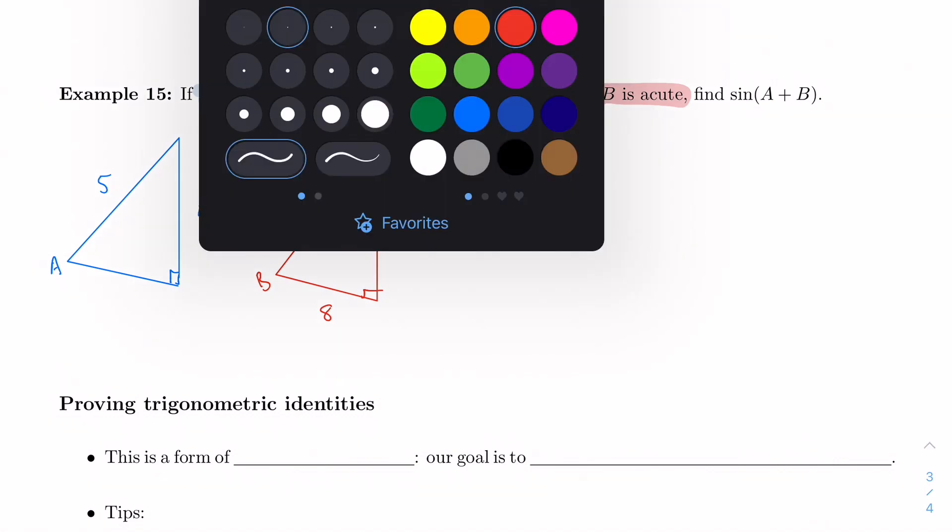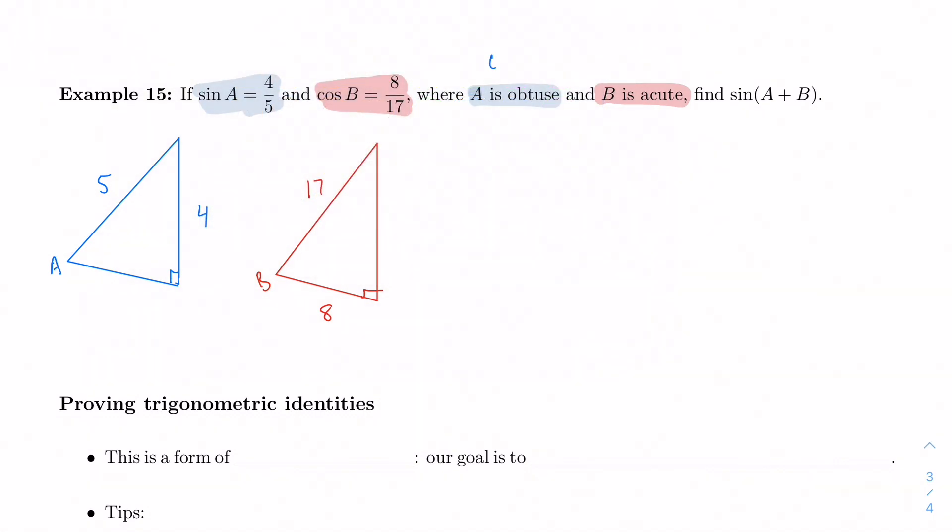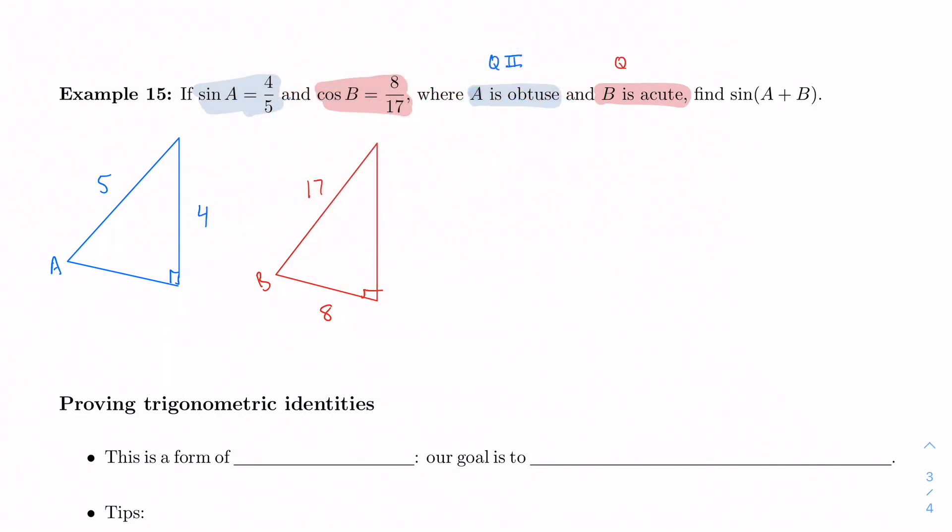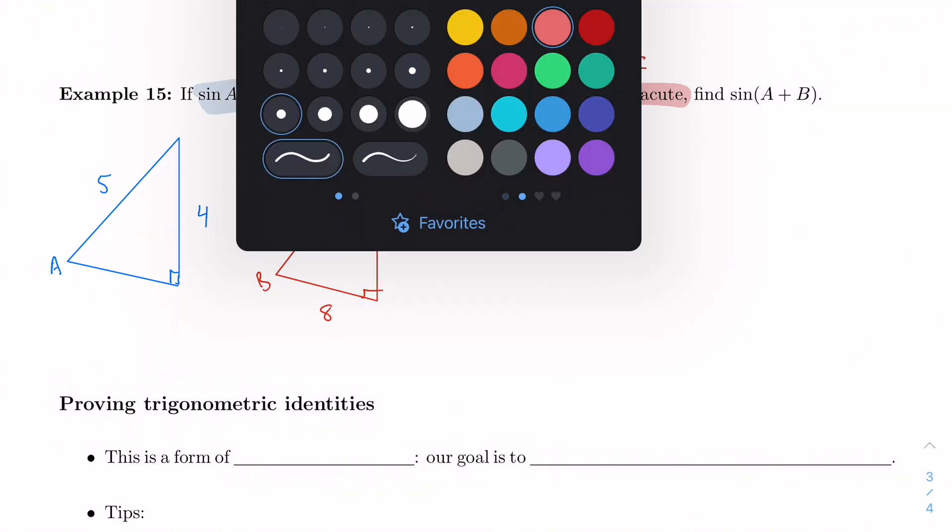So, well, if A is obtuse, that means it's in quadrant 2. And if B is acute, then it is in quadrant 1. And ultimately, my goal here is to find sine of A plus B.